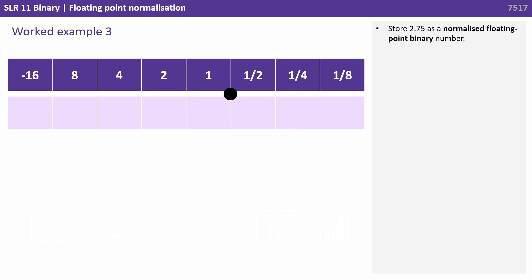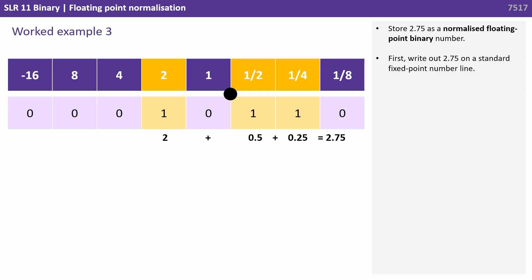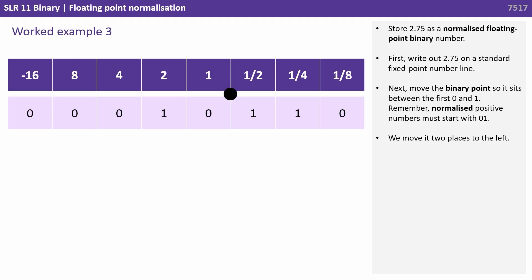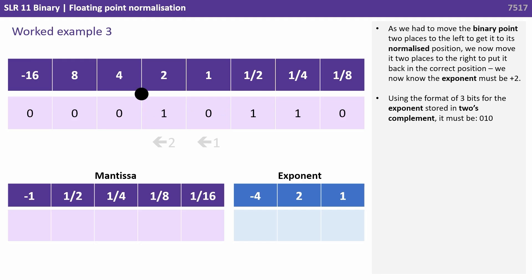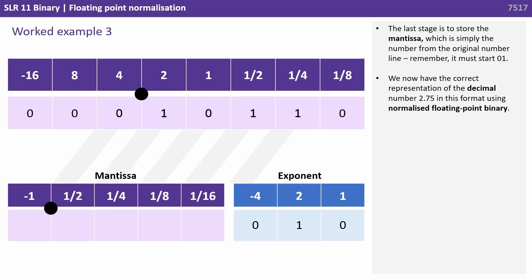For our third example, we store 2.75 as a normalised floating point binary number. Write out 2.75 on a standard fixed point number line, then move the binary point two places to the left so positive normalised numbers start 01. The exponent must be positive 2, stored as 010 in three bits of two's complement. The last stage is to store the mantissa, simply copying it from the original number line remembering it must start 01. We now have the correct representation of 2.75 in normalised floating point binary.